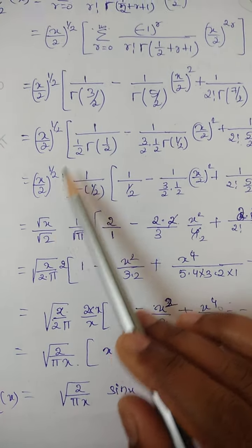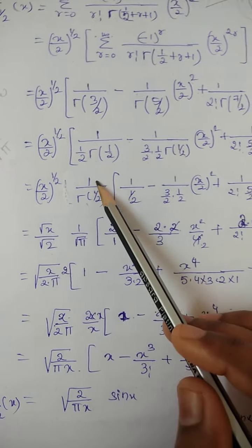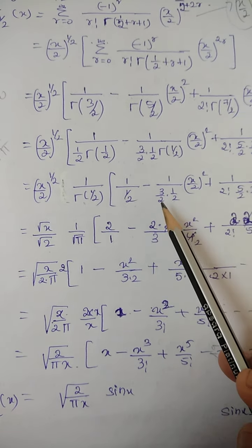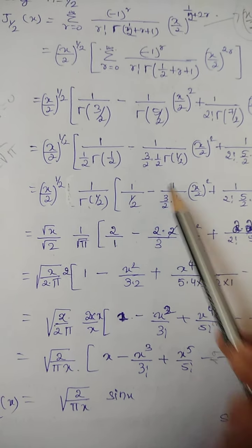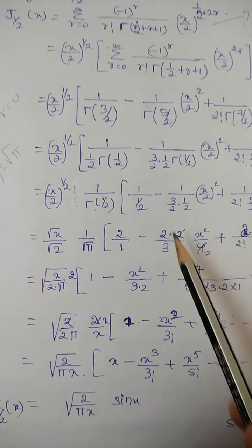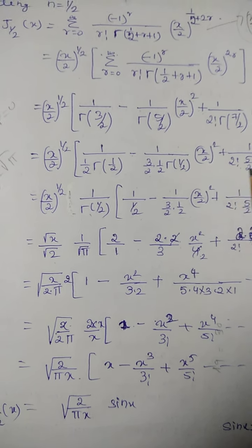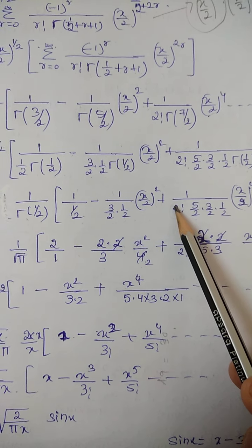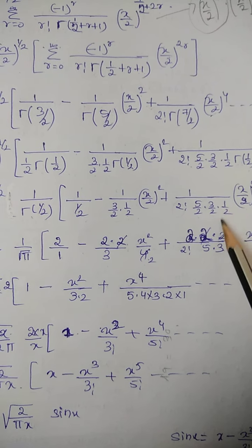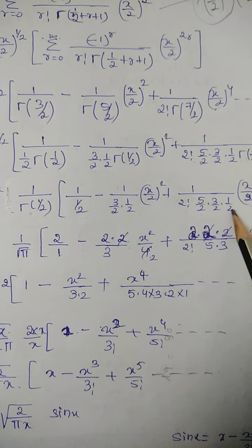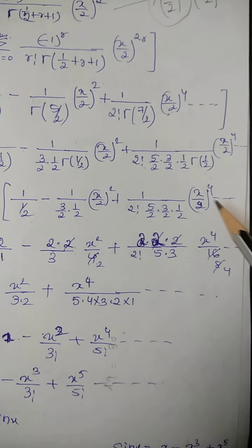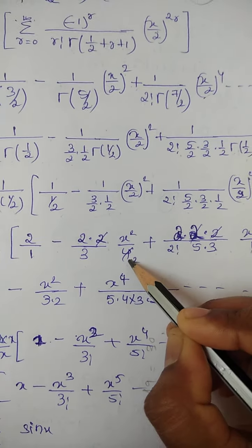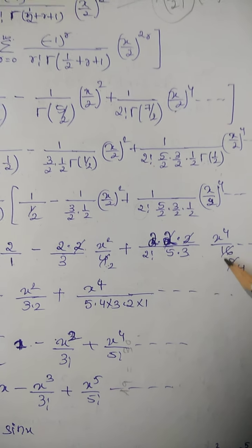Now (x/2)^(1/2) = √x / √2, and 1/Γ(1/2) = 1/√π. The denominators with fractions move to the numerator: 1/(1/2) = 2, and 1/((3/2)·(1/2)) gives 2·2/3, and for the next term 2·2·2/(5·3·1), with x^4/16 where cancellations occur — 2s cancel with the 16 giving 8, and further simplification follows.